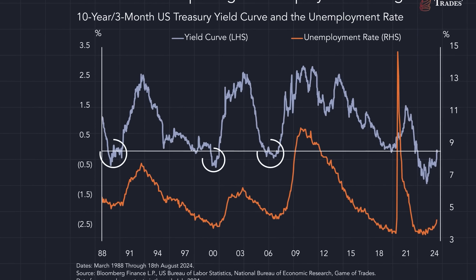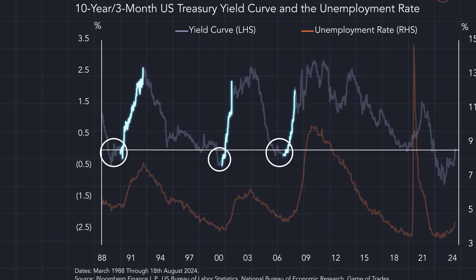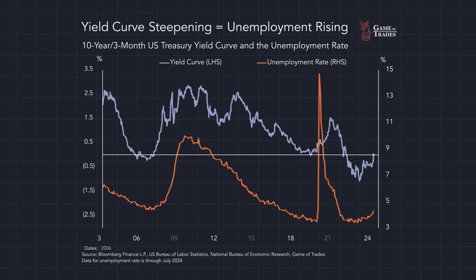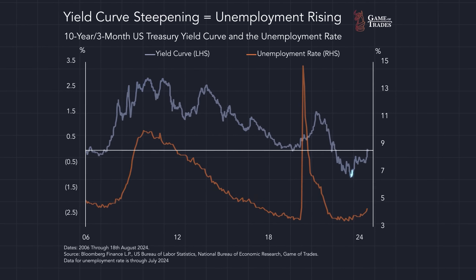When the yield curve is inverted, it means the labor market is very hot, and that often coincides with the moment where the Federal Reserve is raising interest rates and tightening monetary policy to cool down the labor market. As the yield curve uninverts and steepens, it means the Federal Reserve is loosening monetary policy because the labor market is cooling down and the unemployment rate is typically rising.